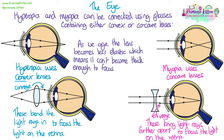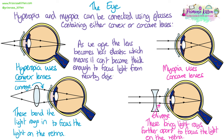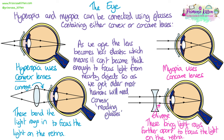As we age, the lens becomes less elastic and less able to stretch, which means it can't become thick enough to focus light from nearby objects. This means that as you get older, your ability to accommodate nearby objects will get worse, and most people will need convex reading glasses to help them see things close up.